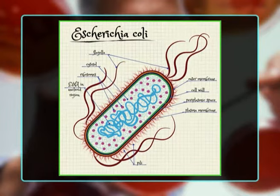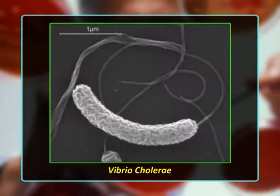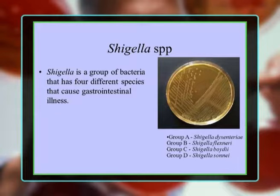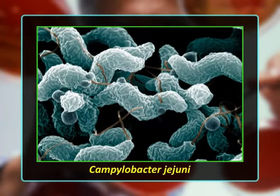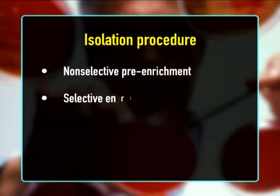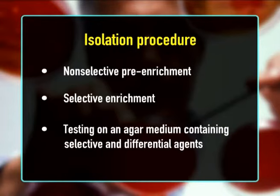Qualitative methods — isolation of pathogens: the main objective is to determine whether a sample contains viable cells or spores of a specific pathogen. Foods are tested for pathogens such as Salmonella, E. coli O157:H7, L. monocytogenes, Vibrio cholerae, and Shigella species by specific isolation procedures. An isolation procedure contains several steps: non-selective pre-enrichment, selective enrichment, and testing on an agar medium containing selective and differential agents. Since food may contain a low population of a pathogen in an injured state, the food sample (e.g., 25 g) is first pre-enriched in a non-selective broth to allow injured cells to repair and multiply.